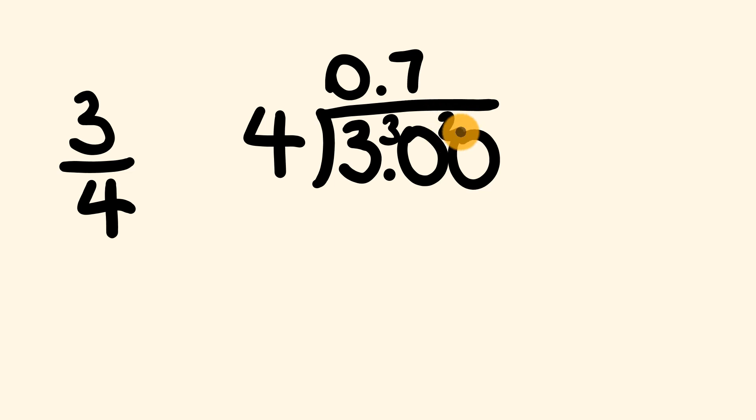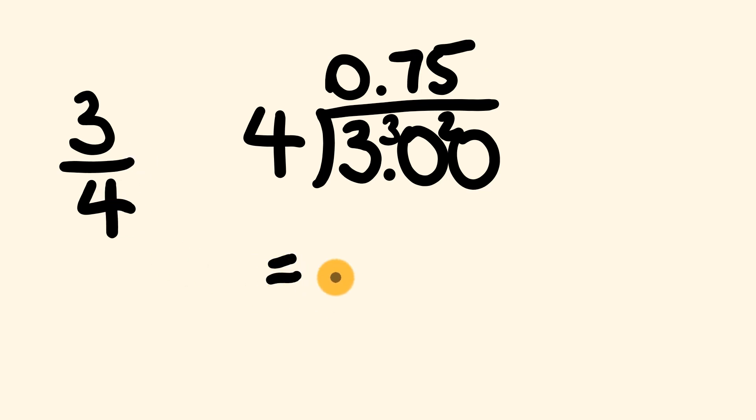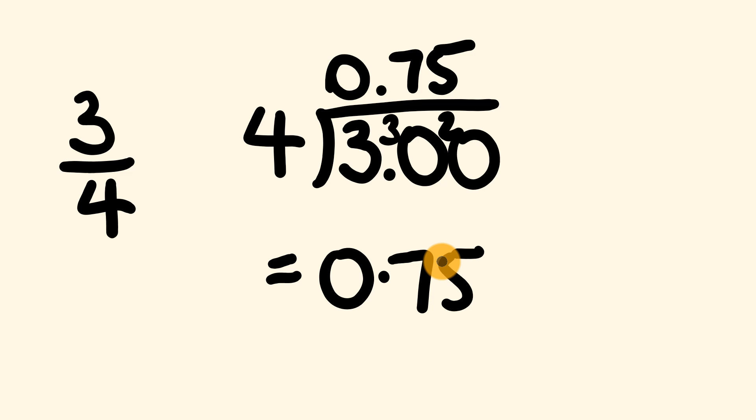That 2 gets carried across. How many times does 4 go into 20? It goes in 5 times and there is 0 remainder. So our answer is done. We have it right here that 3 quarters is equal to 0.75. And that's how you convert any fraction into a decimal — really easy. Just treat it like the division problem that it is.